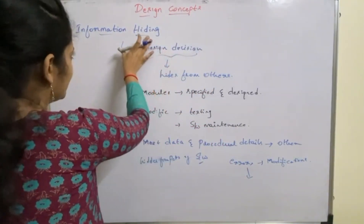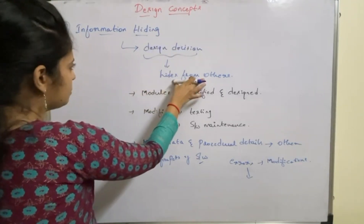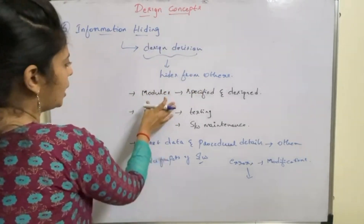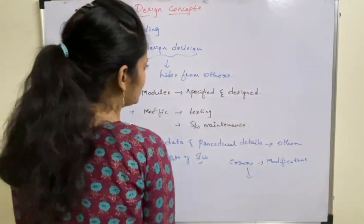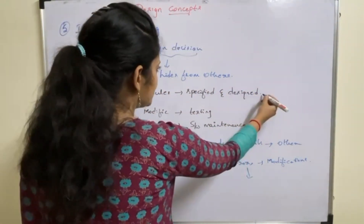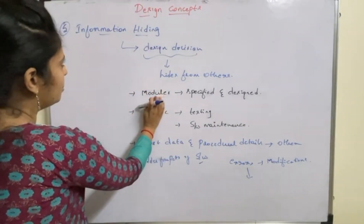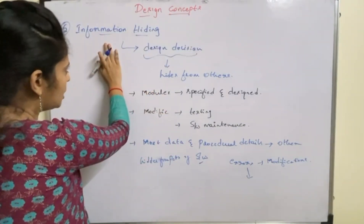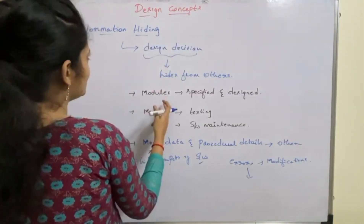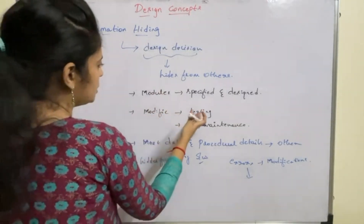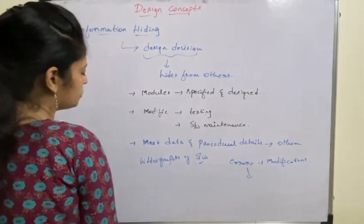So what is information hiding? Information hiding hides information from all others. Modules are specified and designed such that the information present in one module is inaccessible to other modules. The main advantage is that it provides benefits during modifications done in either the testing phase or the software maintenance phase.